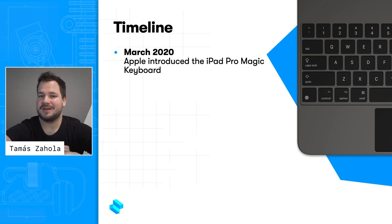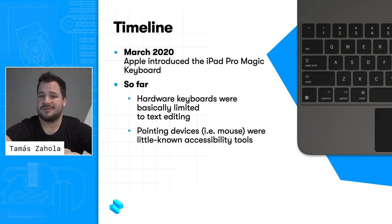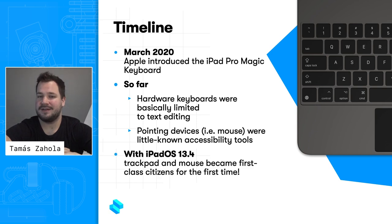In March 2020, Apple introduced the iPad Pro Magic Keyboard. Before this, external keyboards were basically limited to text editing, and pointing devices like mice were hidden accessibility features only. With iPadOS 13.4, the mouse and keyboard suddenly became first-class citizens for the first time on iOS.